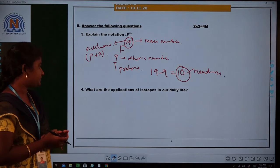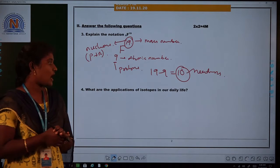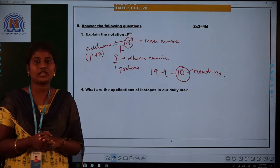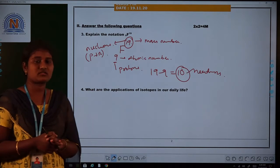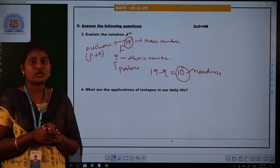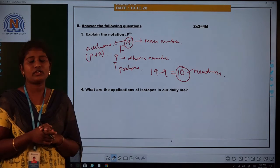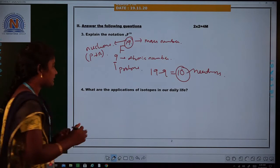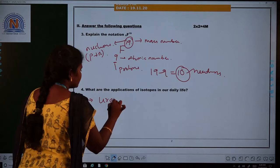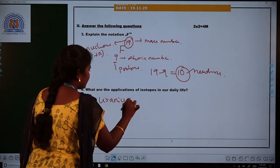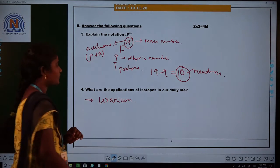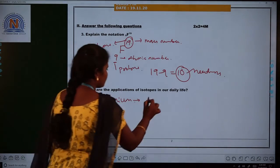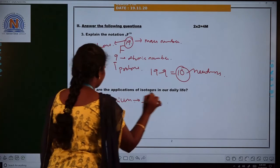Next, see the fourth question: What are the applications of isotopes in our daily life? These isotopes are generally used in chemical as well as medical fields. These isotopes are used in the laboratory to investigate the steps of chemical reactions. Uranium is one of the isotopes—it is used as fuel in nuclear reactions.